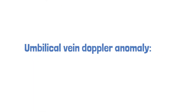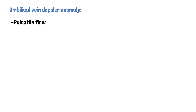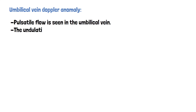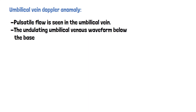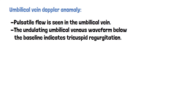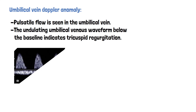Umbilical vein Doppler anomalies: pulsatile flow is seen in the umbilical vein. An undulating umbilical venous waveform below the baseline indicates tricuspid regurgitation.